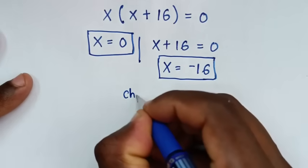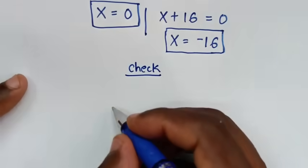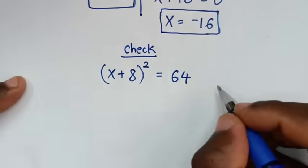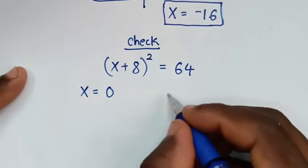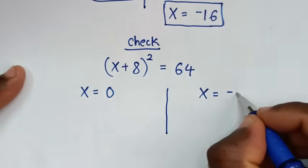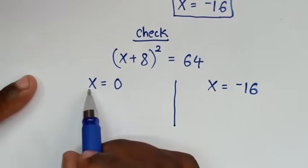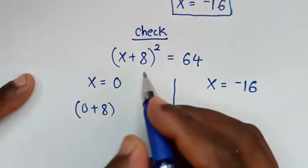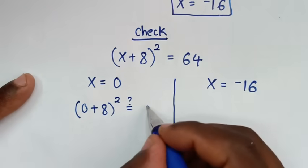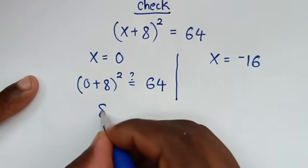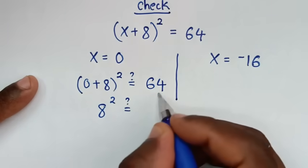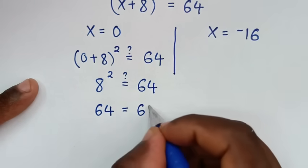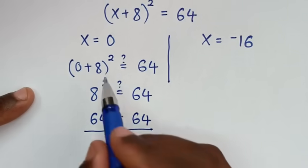Now let's check these values. From our problem (x + 8)² = 64, checking x = 0: (0 + 8)² = 8² = 64. The left side equals the right side, so it is true for x = 0.